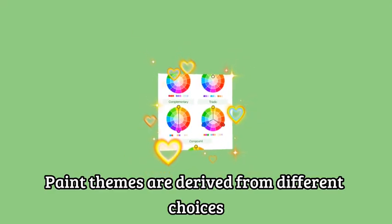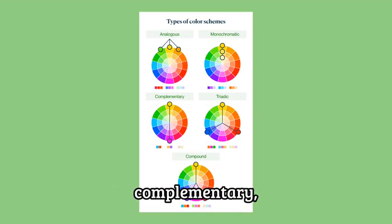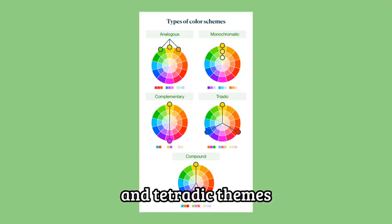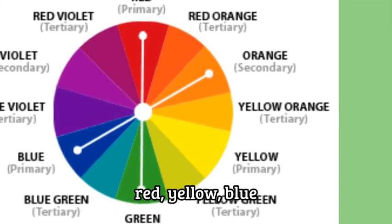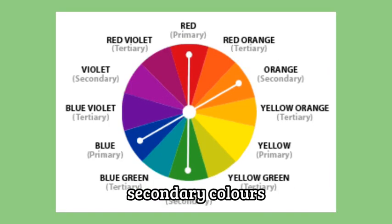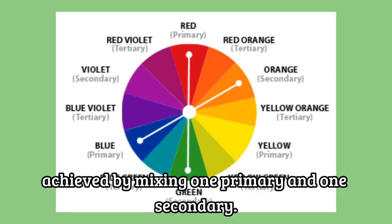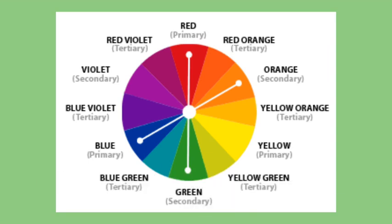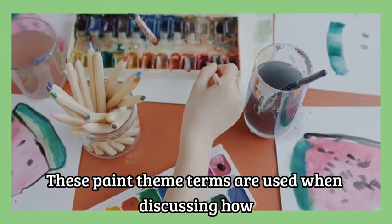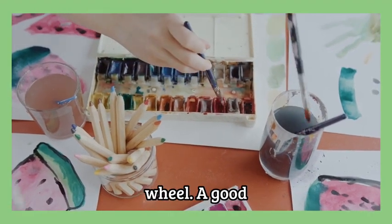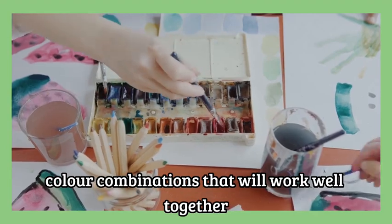Paint themes are derived from different choices from the color wheel. The basic themes include monochromatic, complementary, analogous, triadic and tetradic themes. The colors in the wheel are divided into primary colors — red, yellow, blue — secondary colors — orange, green, violet — and intermediate colors, achieved by mixing one primary and one secondary. Intermediate colors are also called tertiary colors. A good understanding of the color wheel is needed to choose color combinations that will work well together.